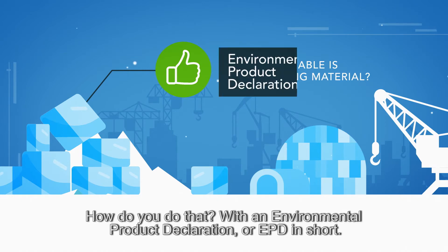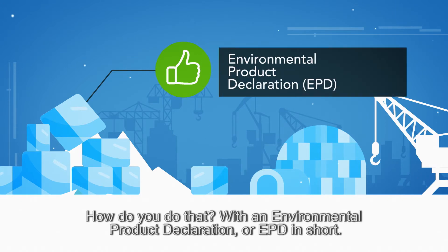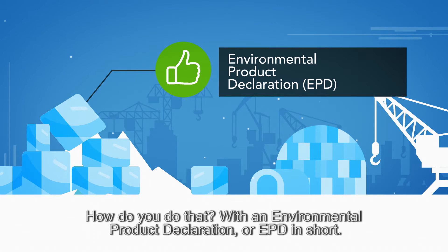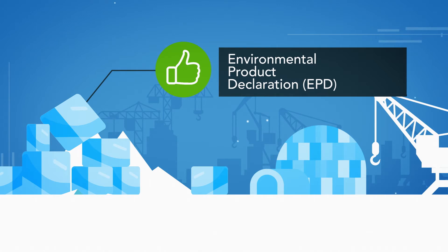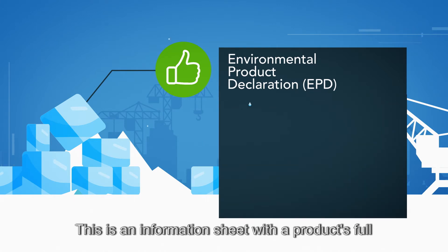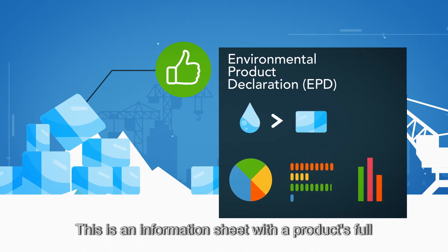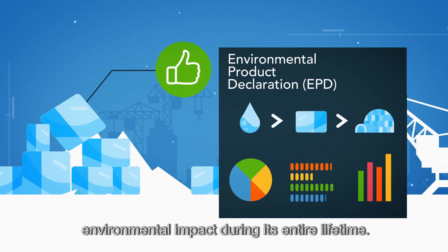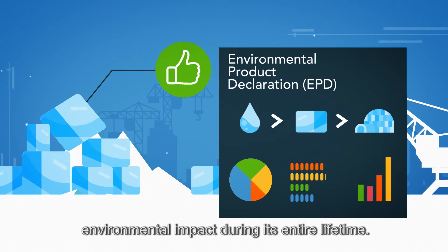How do you do that? With an Environmental Product Declaration, or EPD in short. This is an information sheet with a product's full environmental impact during its entire lifetime.